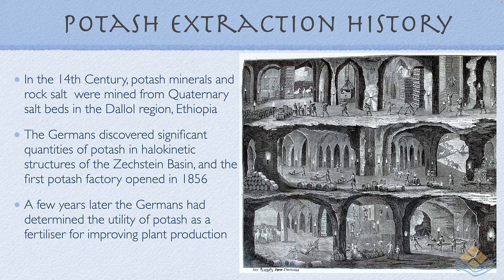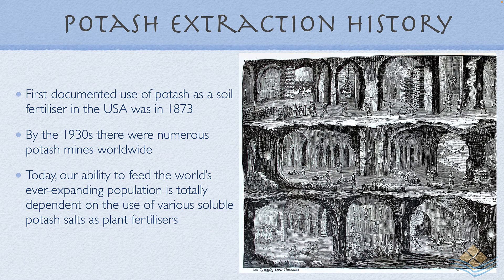Potash mining began in the 14th century in the hydrothermal potash deposits of the Dalol region of Ethiopia. In the mid-1800s, the Germans discovered significant quantities of potash in salt diapyric structures in the Zechstein Basin onshore, and a few years after that German scientists had determined the usefulness of potash as a fertilizer in a variety of plants, fruits, and vegetables. In the US, the first documented use of potash as a fertilizer was in the 1870s, and the use of fertilizer had become so widespread that by the mid-1930s there were numerous potash mines worldwide. Our ability to feed an ever-expanding world population will be totally dependent on increasing usage of potash along with nitrogen and phosphorus.